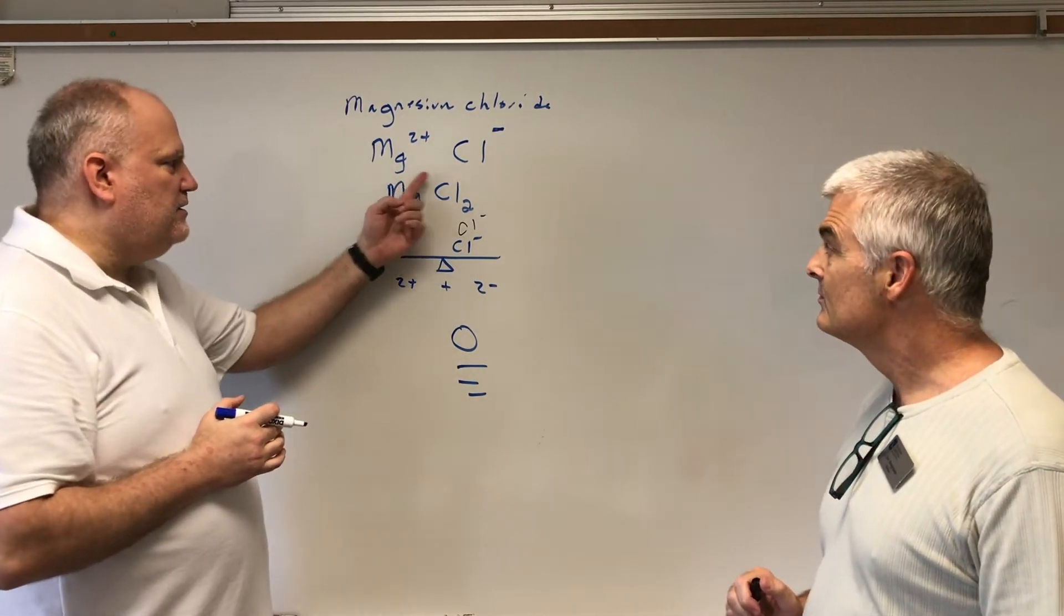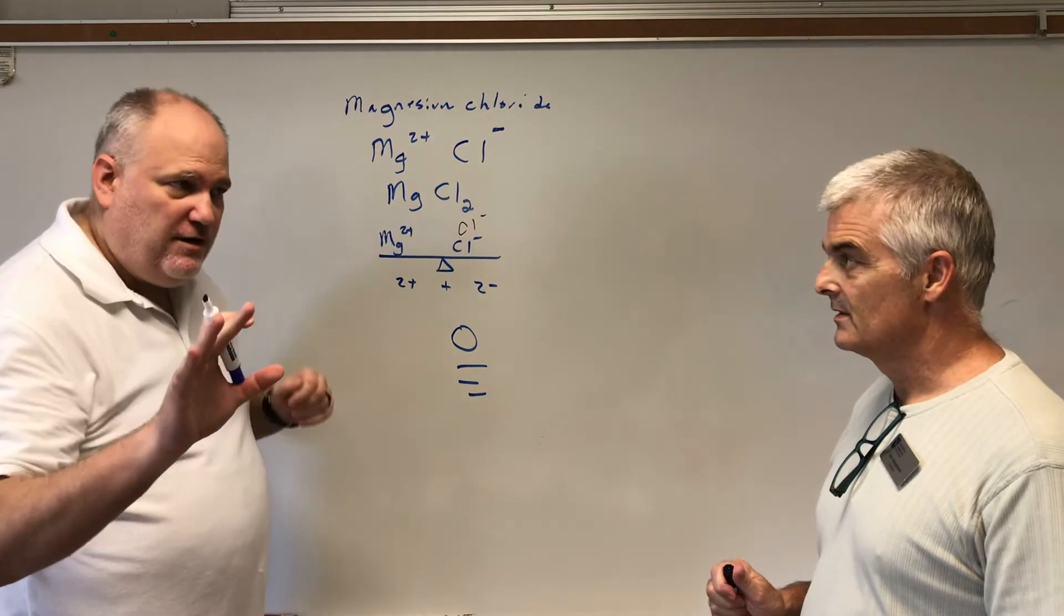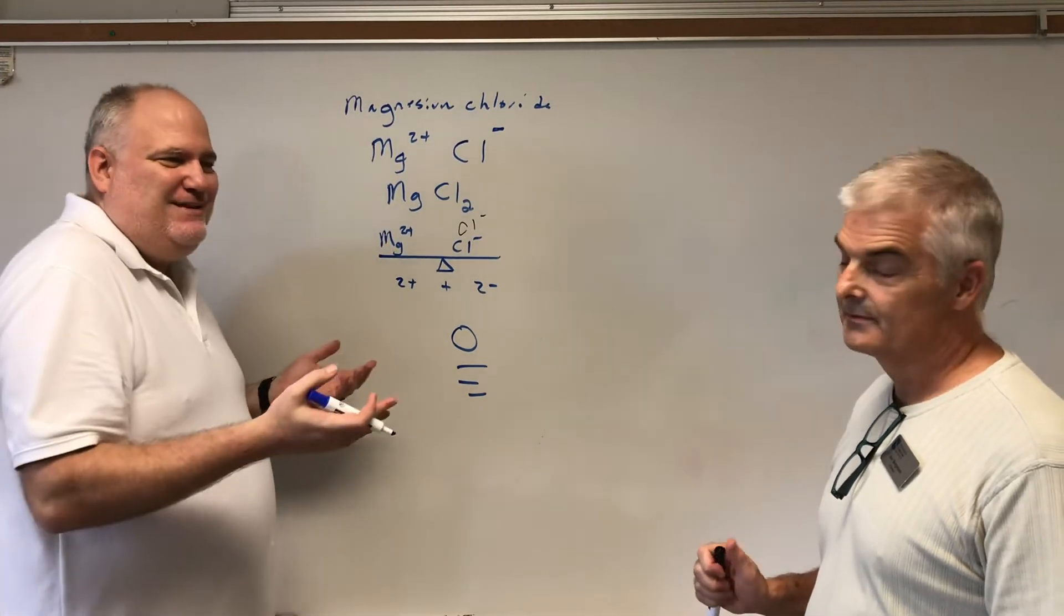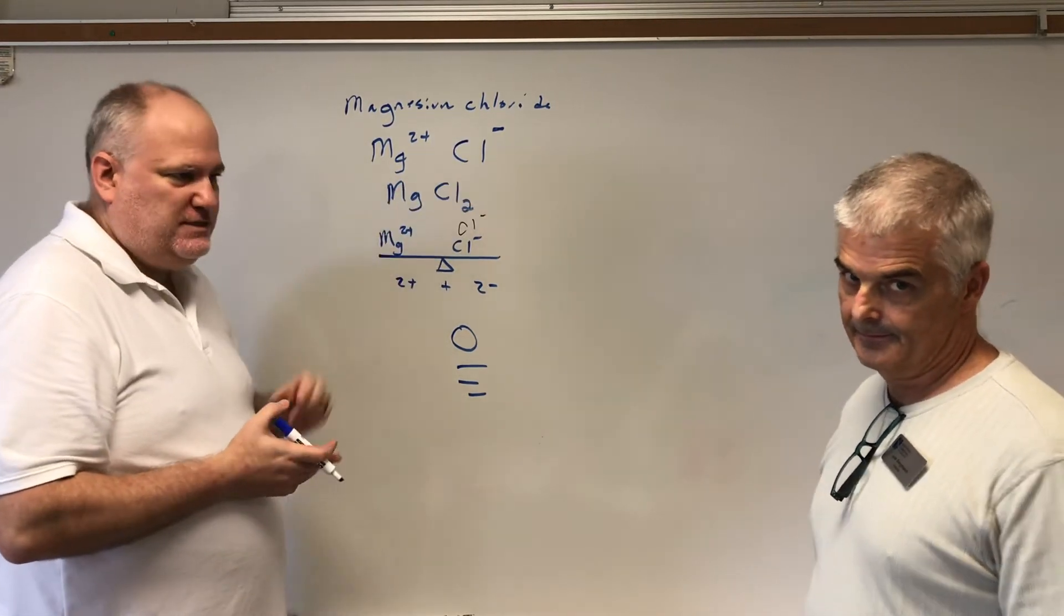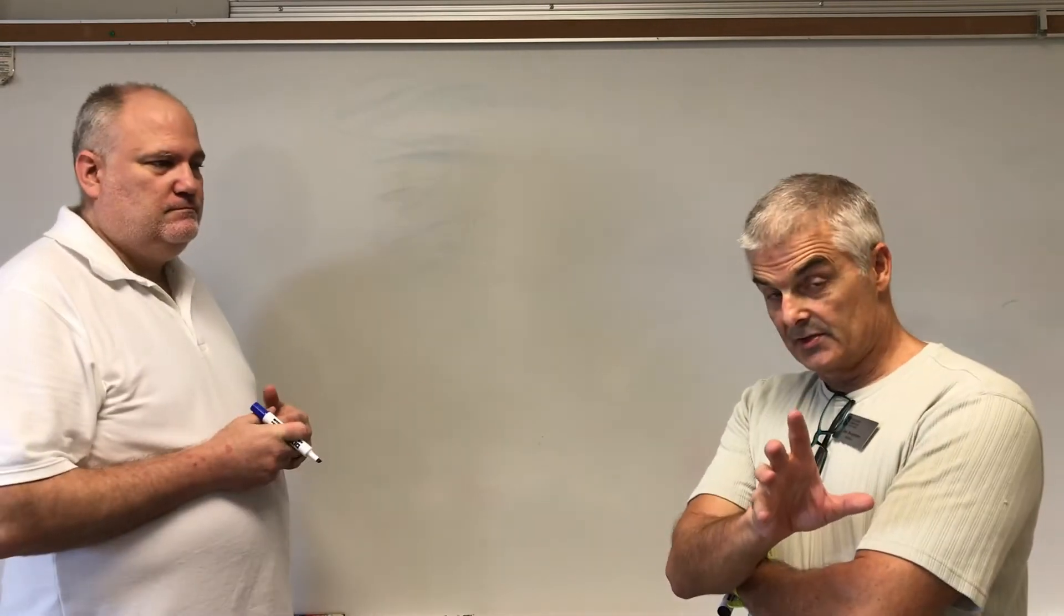Now when we write the actual formula, there is one Mg and two Cls. It's important to note that when you write the formula, it becomes MgCl subscript two. This means there's two chlorines and one magnesium in magnesium chloride. You'll note we also disappeared the charges. They're still there, but they cancel out. We don't put a two plus here and a minus here.